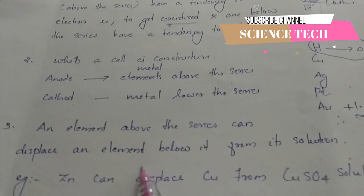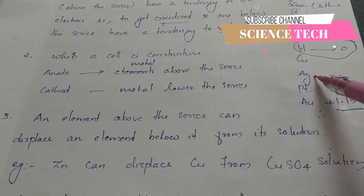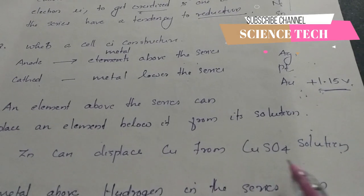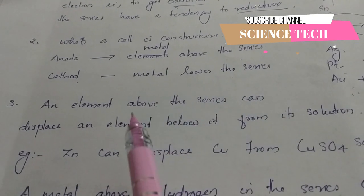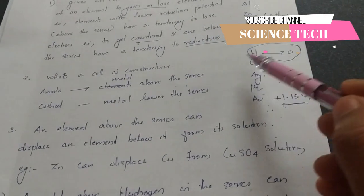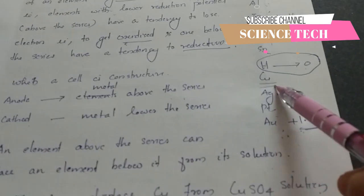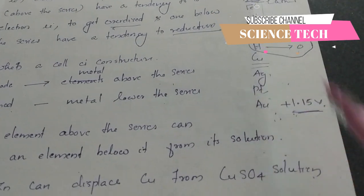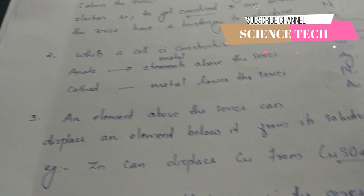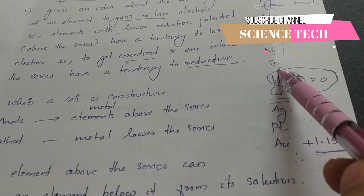This third application is very important. The electrochemical series can compare two elements. The metal higher in the series can displace an element below it from its solution — for example, using a silver nitrate solution.